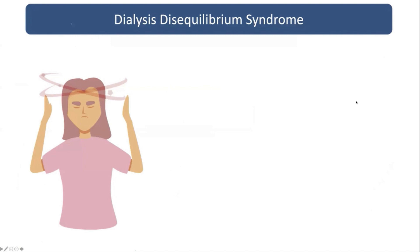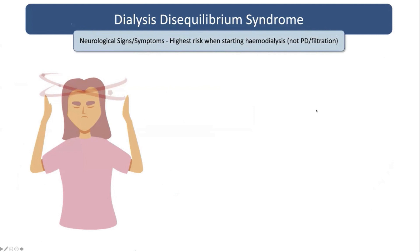Dialysis disequilibrium syndrome is basically a problem of neurological symptoms right after dialysis or during dialysis. That might include things like a seizure, confusion, or vomiting. The absolute highest risk time is when patients are starting off on hemodialysis.